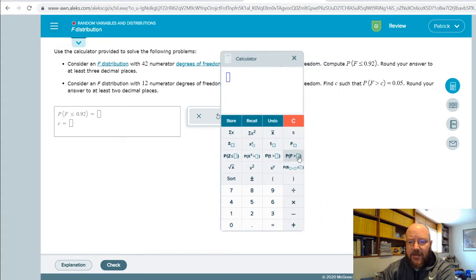Probability of finding an f statistic greater than what. And so this one right here, notice that this actually points towards the 0.92, and so we're going to actually have to do one minus on this one. If it points the other way, you can just punch it in directly.